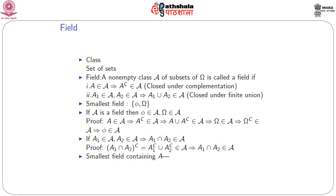One interesting thing is: what is the smallest field? The smallest field is the collection {φ, ω}. To verify: φ belongs to script A, and its complement φᶜ = ω also belongs to script A, so it is closed under complementation. The union of φ and ω is ω, which also belongs to script A, so it is closed under finite union. Both conditions are satisfied, making this the smallest field.